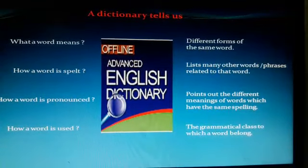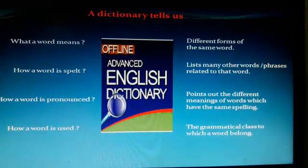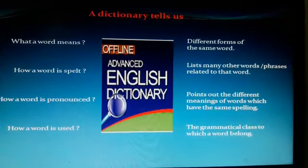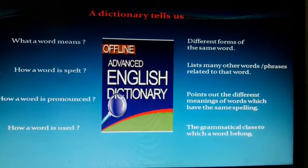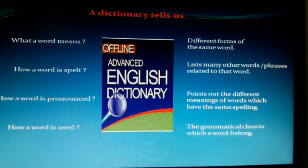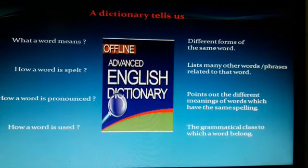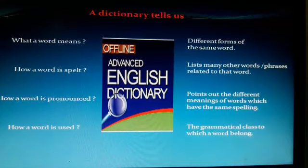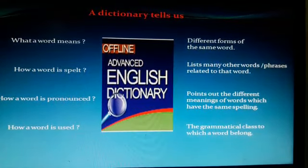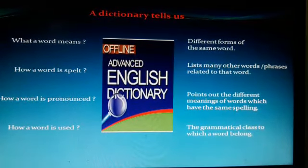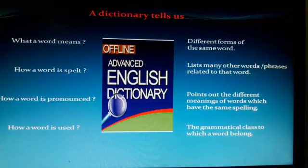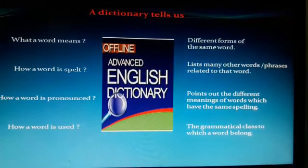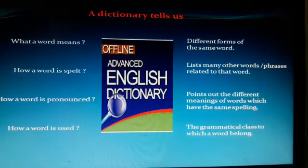A dictionary tells us what a word means, how a word is spelt, how a word is pronounced, how a word is used, different forms of the same word, lists many other words and phrases related to that word, points out the different meanings of words which have the same spelling, and the grammatical class to which a word belongs.